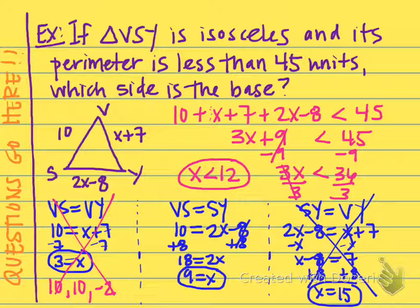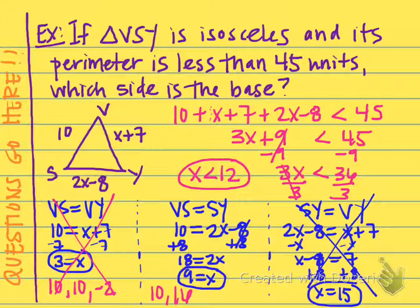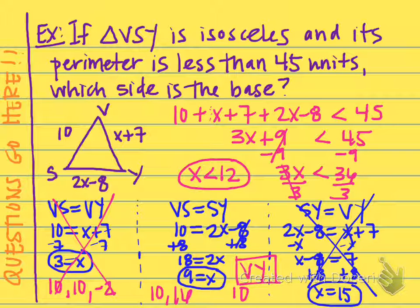VS is 10. VY is x plus 7, or in this case 9 plus 7, which would be 16. And SY is 2x minus 8, or 2 times 9 minus 8: 2 times 9 is 18 minus 8, giving me 10. So my sides are 10, 16, and 10. The side that is 16 is the one that's not congruent to the others, and that was VY. Therefore, VY is my base, and it has a length of 16, whereas the other two congruent sides both have a length of 10.